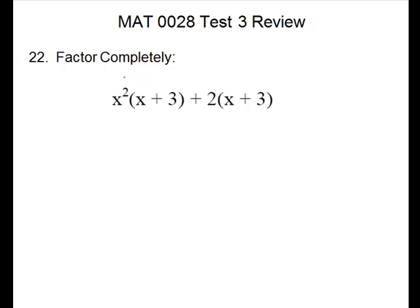The only thing we can try here is a GCF. This one does have a GCF, it's just a little bigger than we're used to. It is what we call a common binomial. So the x plus 3 is in both — we can take it to the outside. That is our GCF. To get back to the line above, we have the x plus 3 outside, so we're missing the x squared for the first term. For the second term, we have the x plus 3 outside, we're missing the plus 2.